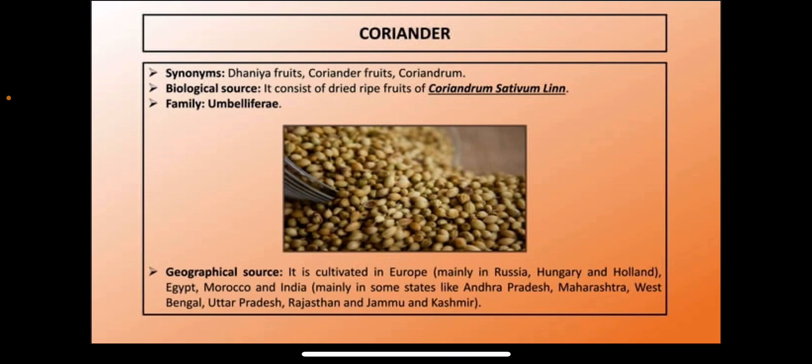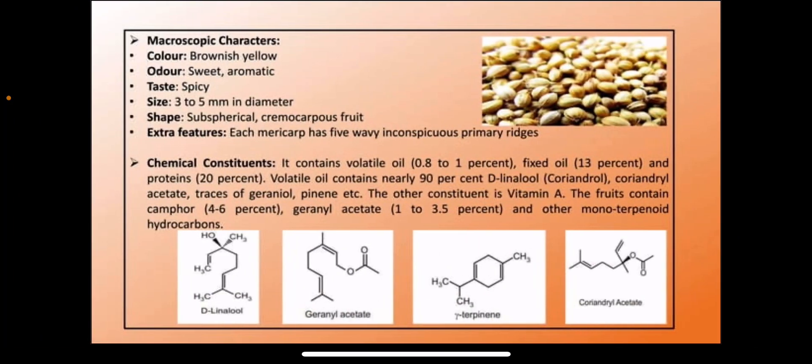Geographical source — where we can cultivate coriander: it is cultivated in Europe, Russia, Hungary, Holland, Egypt, Morocco, and India, mainly in Andhra Pradesh, Maharashtra, West Bengal, Uttar Pradesh, Rajasthan and Jammu and Kashmir.